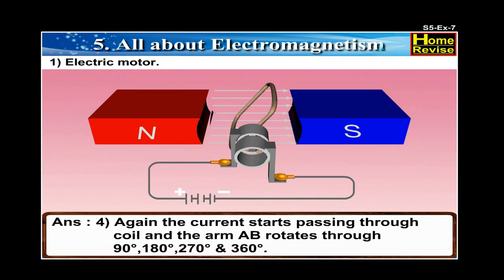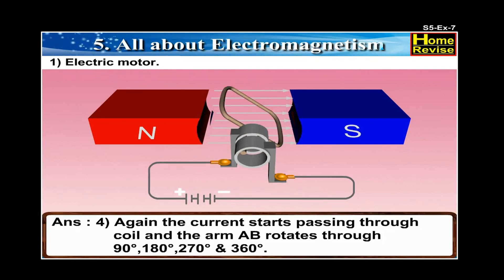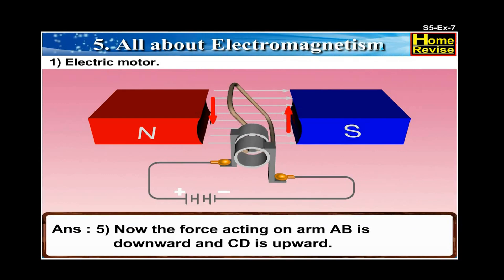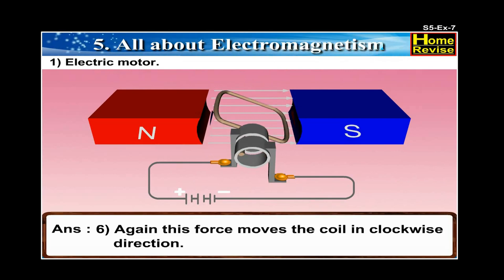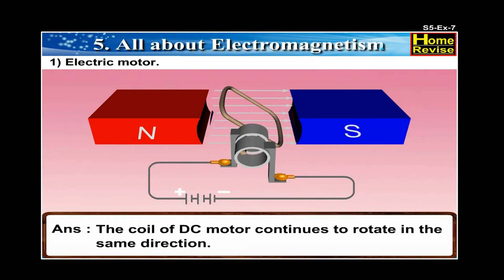Thus, no force acts on the coil, but the coil does not stop due to inertia. It continues rotating until the commutator again comes in contact with brushes B1 and B2. 4. Again, the current starts passing through the coil and arm AB rotates through 90°, 180°, 270° and 360°. 5. The force acting on arm AB is downward and CD is upward. 6. This force moves the coil in the clockwise direction. 7. Thus, the coil rotates with the help of electrical energy. The coil of the DC motor continues to rotate in the same direction.